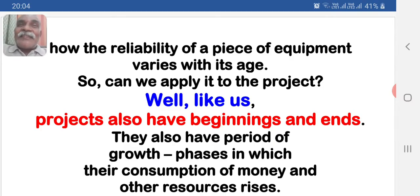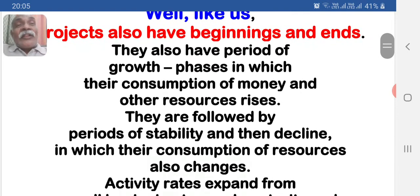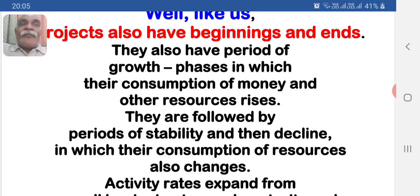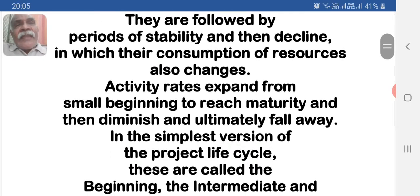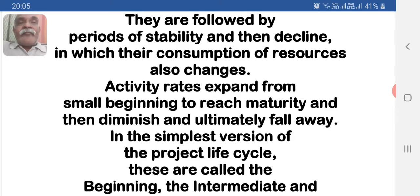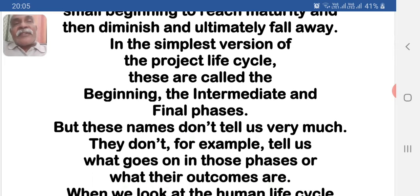Projects also have periods of growth in which their consumption of money and other resources rises. They are followed by periods of stability and then decline in which the consumption of resources also changes. Activity rates expand from small beginnings to reach maturity and then diminish and ultimately fall away. In the simplest version of the project life cycle, these are called the beginning, the intermediate, and final phases.